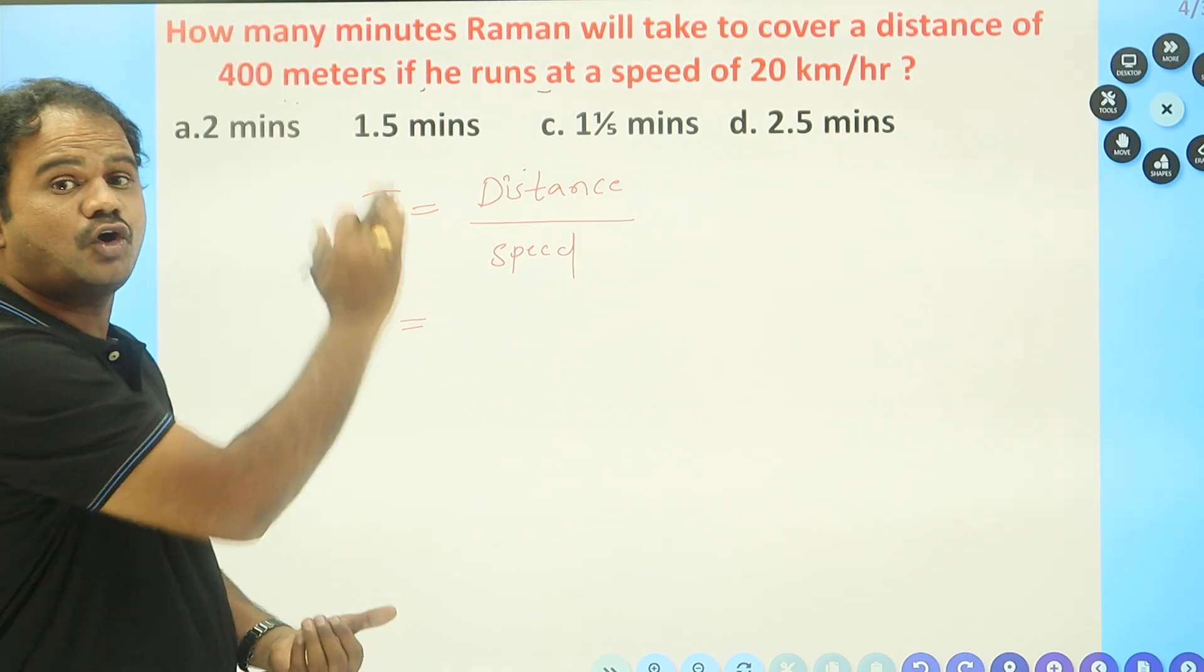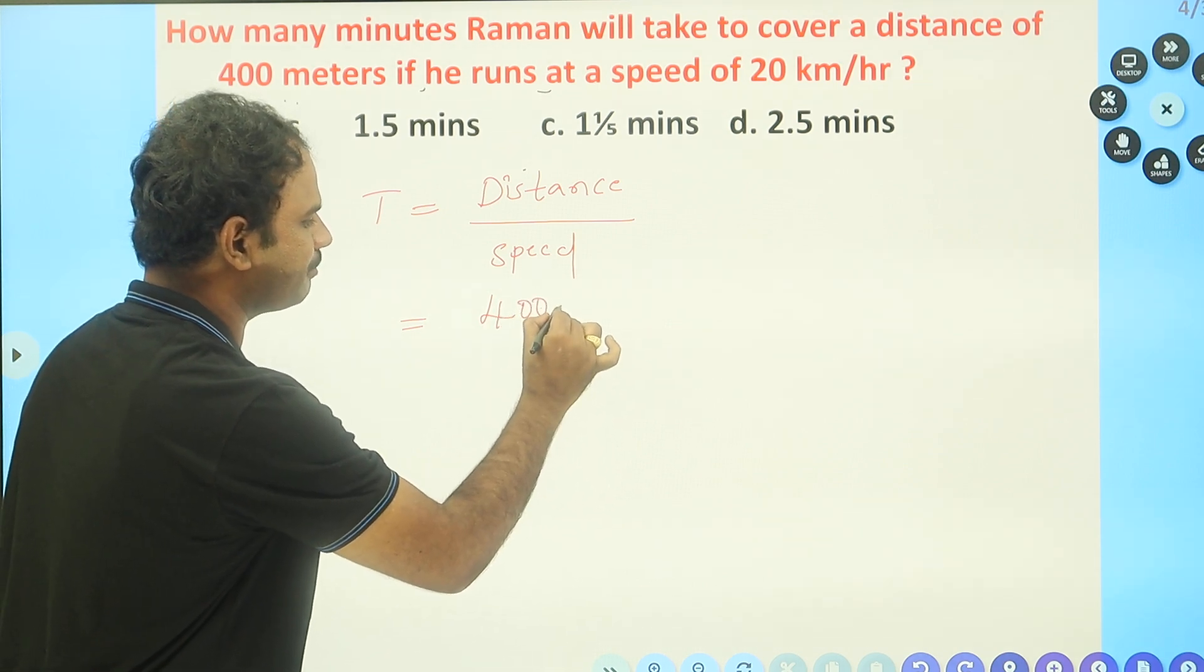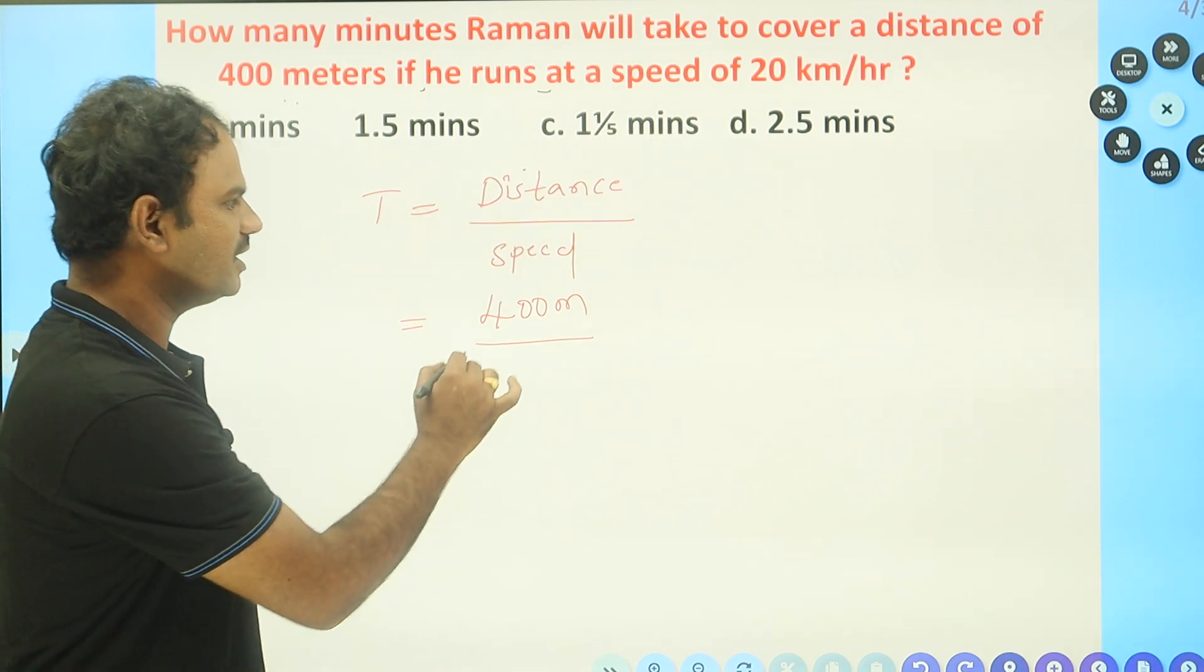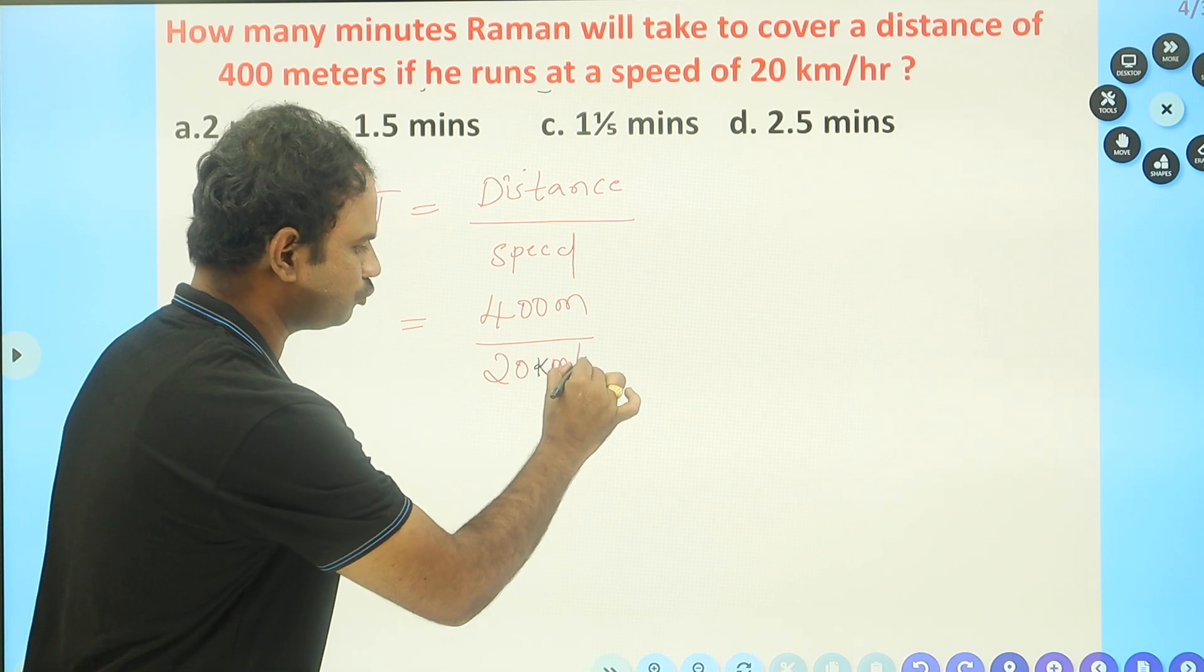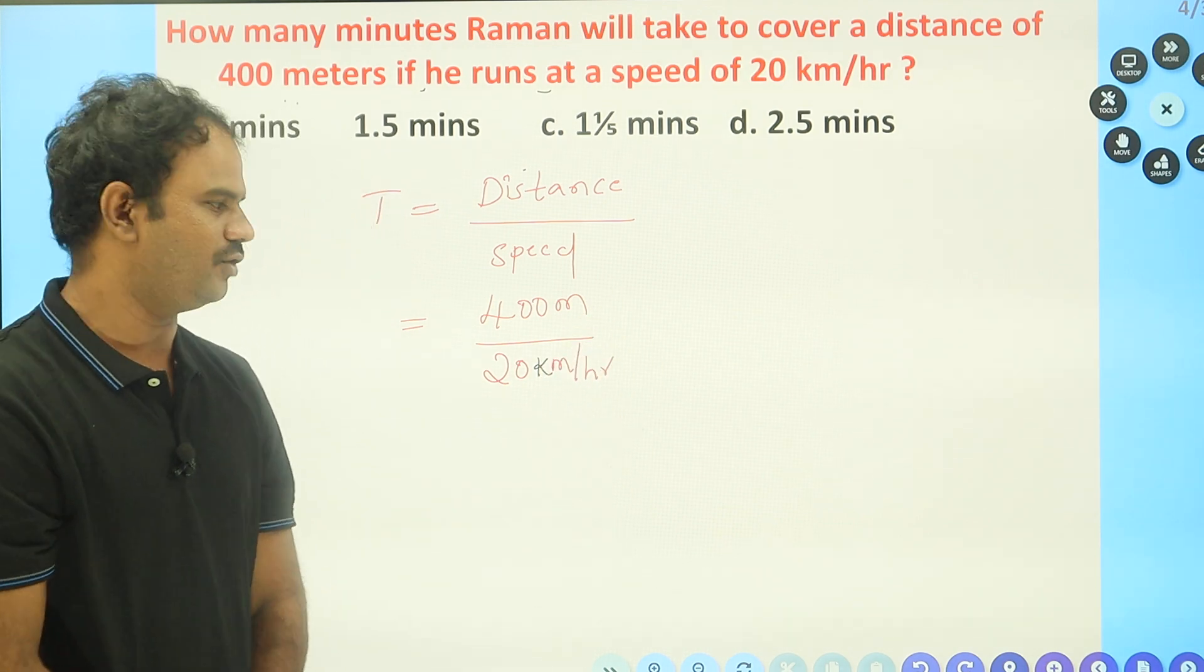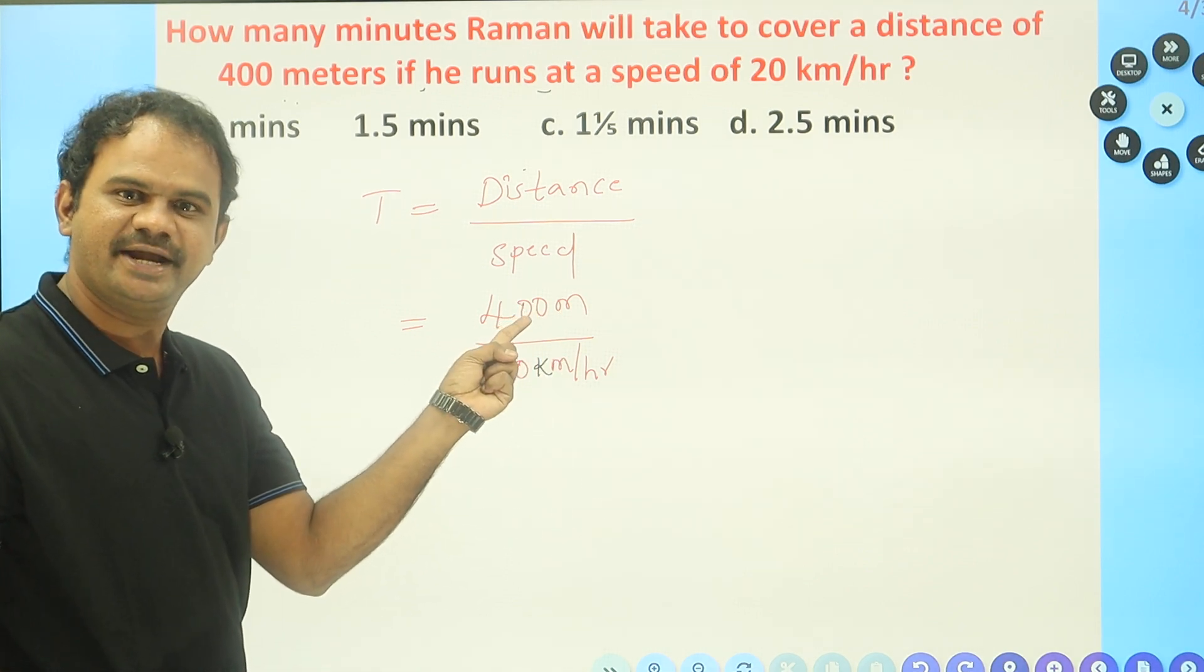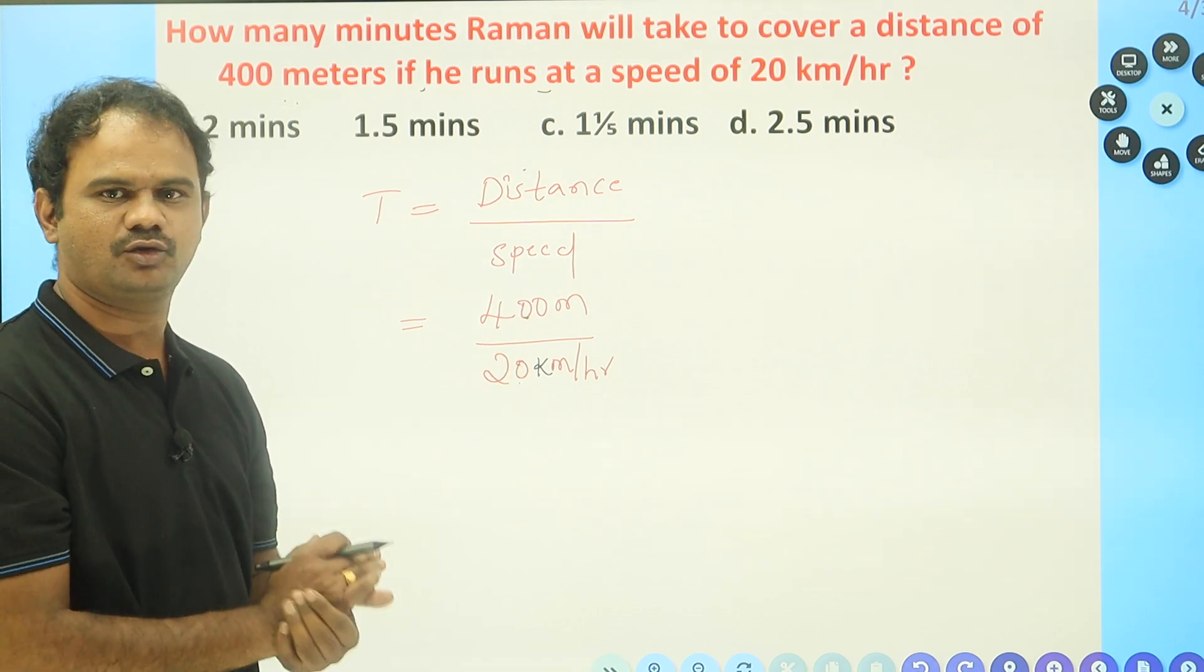He has given the distance Raman can cover: 400 meters. Speed is also given - 20 kilometers per hour. Look at the question. Distance is given in meters, and speed is given in kilometers per hour. We cannot cancel these two values directly.